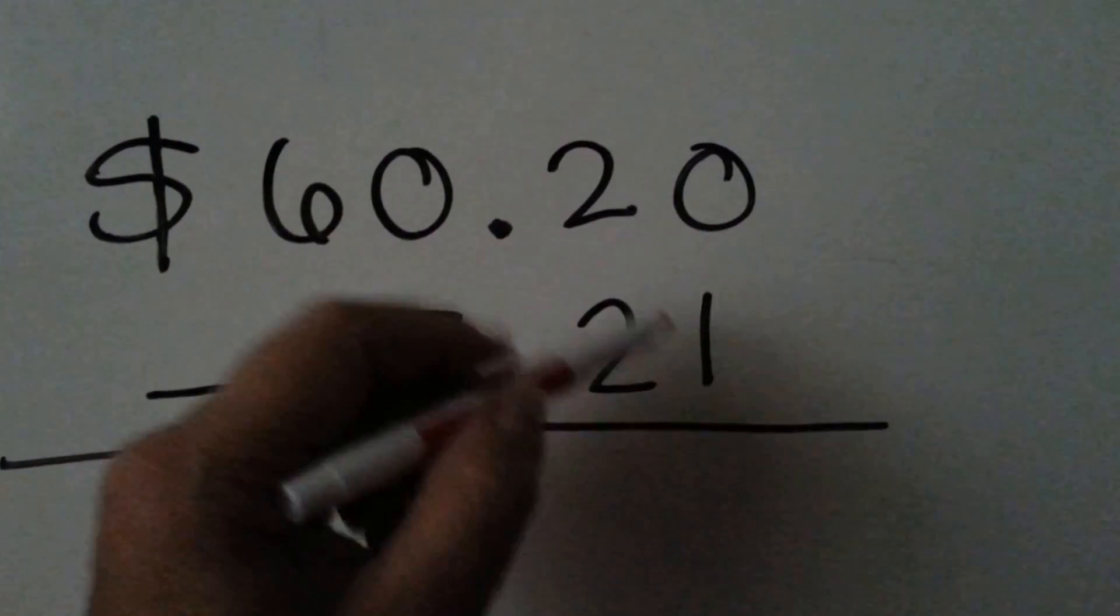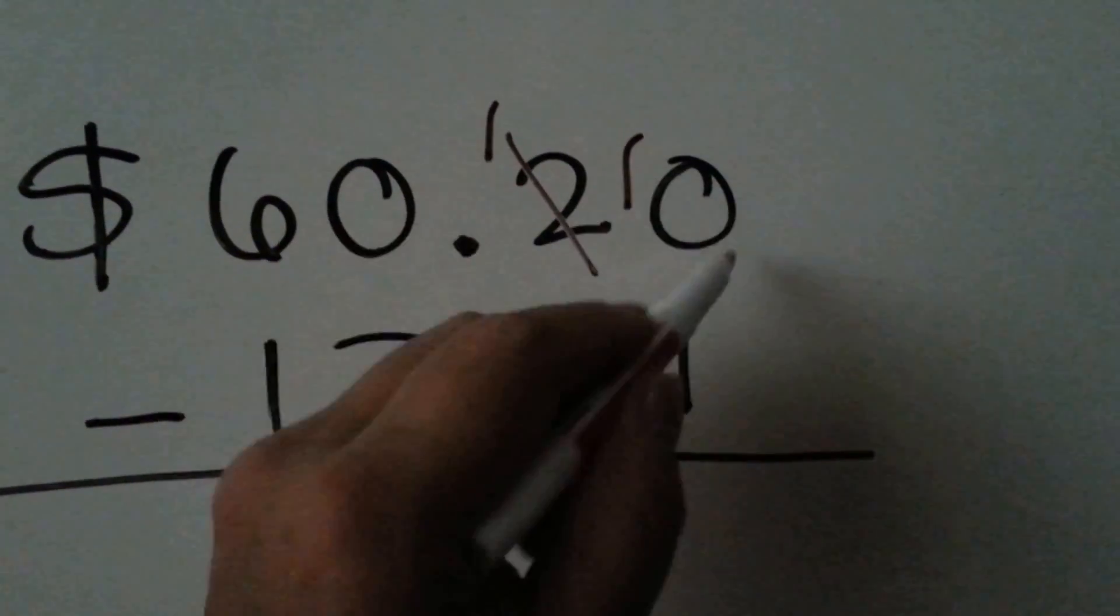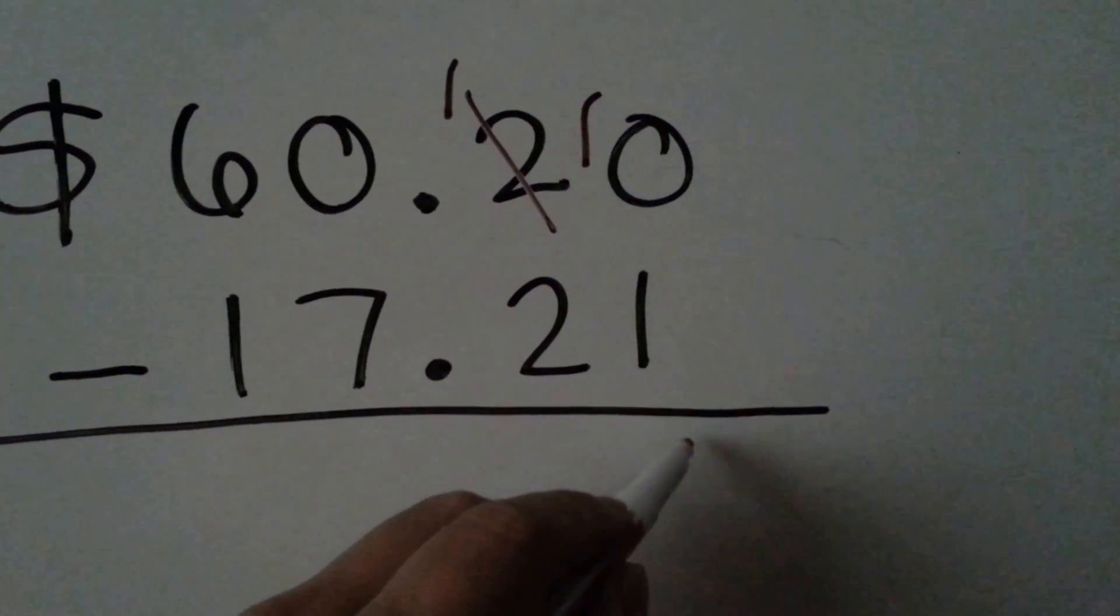You can't have zero and take one away so we need to borrow it from the two. It becomes a one and the zero becomes a ten. Ten take away one is nine.